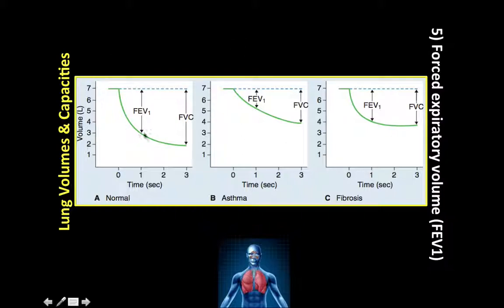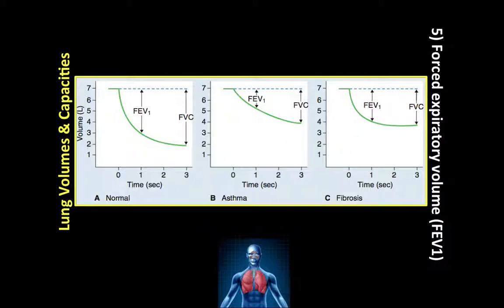We use FEV1/FVC to identify diseases. Normally, FEV1/FVC ≈ 80%. In obstructive disorders like asthma, FEV1 is reduced more than FVC, so FEV1/FVC is decreased below 80%. In restrictive/fibrotic lung diseases, both FEV1 and FVC are reduced almost equally, giving a normal or even increased FEV1/FVC ratio. This covers our topic of lung volumes and capacities.